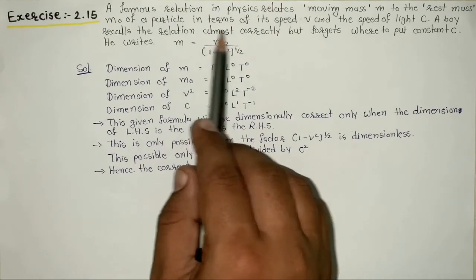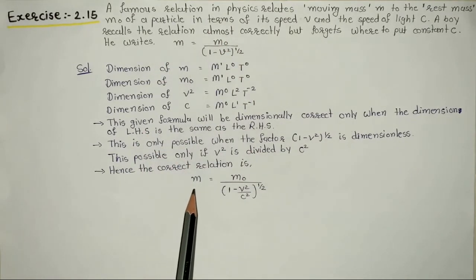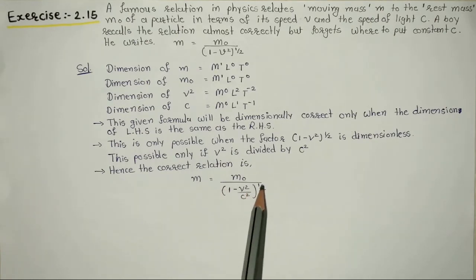So the right equation is m equal to m0 divided by square root of 1 minus v square by c square.